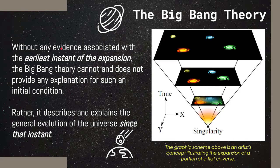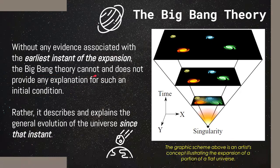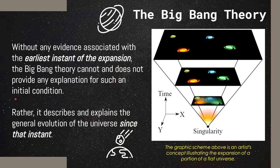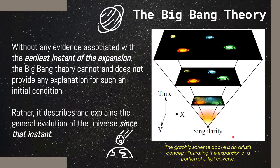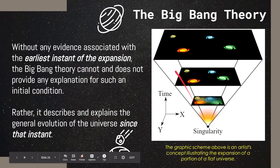Note that without any evidence associated with the earliest instant of the expansion, the Big Bang Theory cannot and does not provide an explanation for such initial condition. It means that the Big Bang Theory can only explain what happened after the singularity or what happened after the expansion of that hot primal initial condition. It cannot provide explanation to what happened before the expansion. It cannot even explain why it happened. It just describes and explains the general evolution of the universe since that instant of expansion.